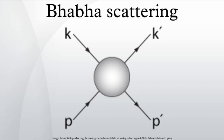In quantum electrodynamics, Bhabha scattering is the electron-positron scattering process. There are two leading-order Feynman diagrams contributing to this interaction: an annihilation process and a scattering process.